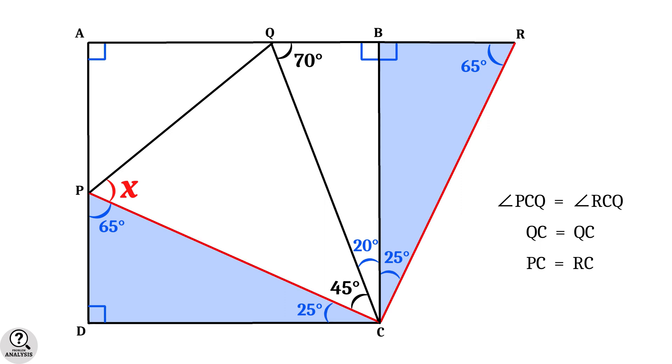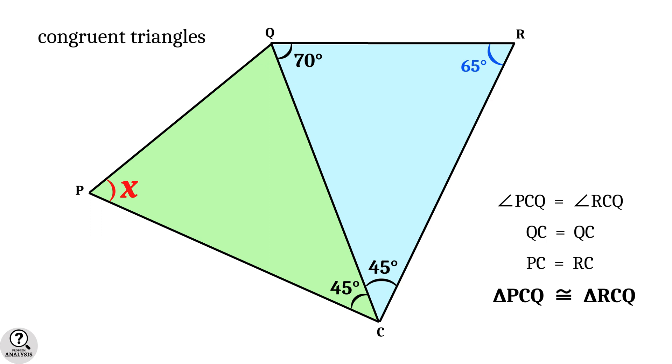Thus, PC and RC are equal. Now these three equalities imply two sides and their interior angle are equal for both triangles. Then, by the property we told, PCQ and RCQ are congruent triangles.